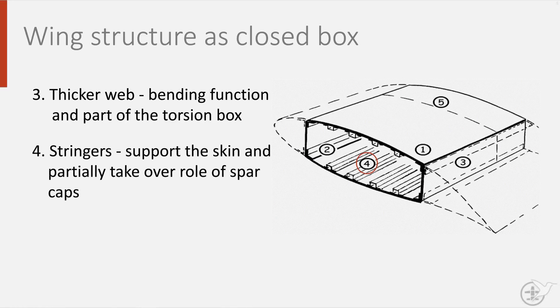Stringers help to support the skin and partially take over the role of the spar caps. And finally, the ribs are used to close off the sides.